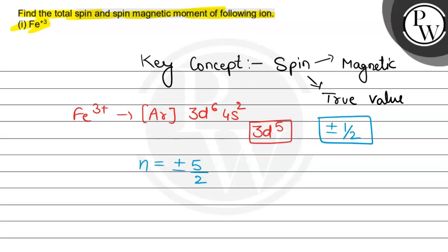Now coming to the value of spin magnetic moment in terms of Bohr magneton, the value of μ is equal to under root of n into n plus 2, where n is the number of unpaired electrons.